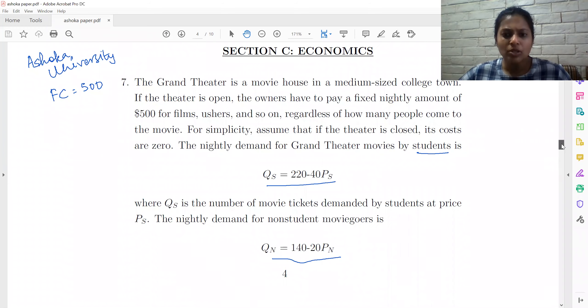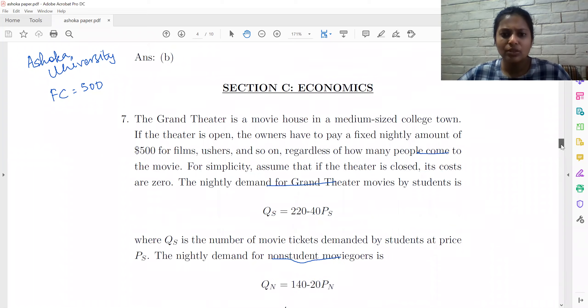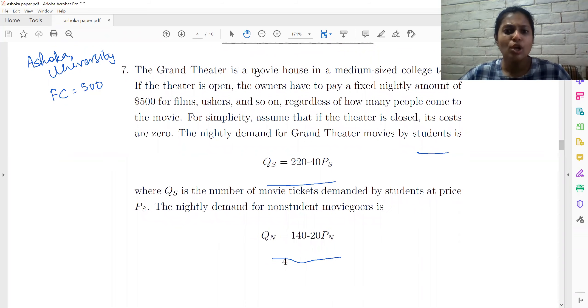So it's possible to price discriminate in this case because you can take the IDs of students and you can charge a lower price from students. Only if you charge a lower price can you price discriminate. You cannot ask for a student ID and then charge a higher price. So it's only possible to either charge the same price from students and non-students or to charge a lower price to students. So assuming they are going to charge a lower price to students, this is a simple case of price discrimination.